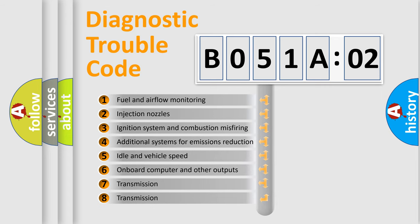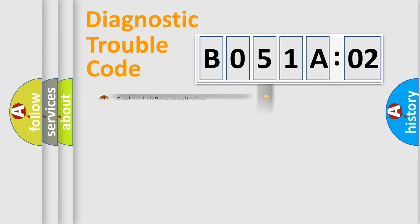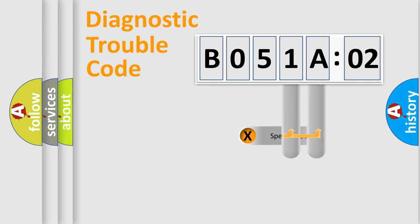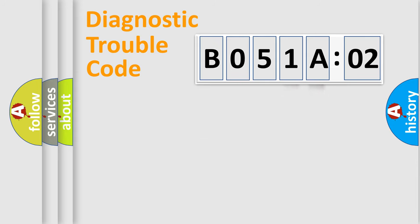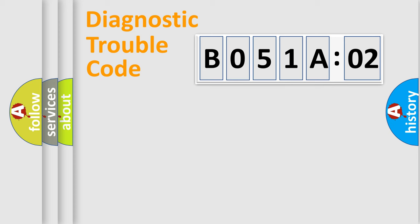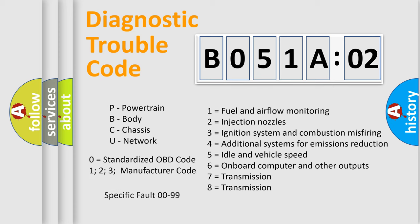The third character specifies a subset of errors. The distribution shown is valid only for the standardized DTC code. Only the last two characters define the specific fault of the group. The add-on to the error code serves to specify the status in more detail — for example, a short to ground. Note that such a division is valid only if the second character code is expressed by the number zero.